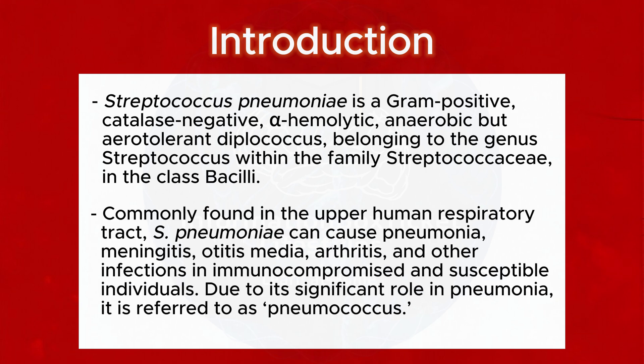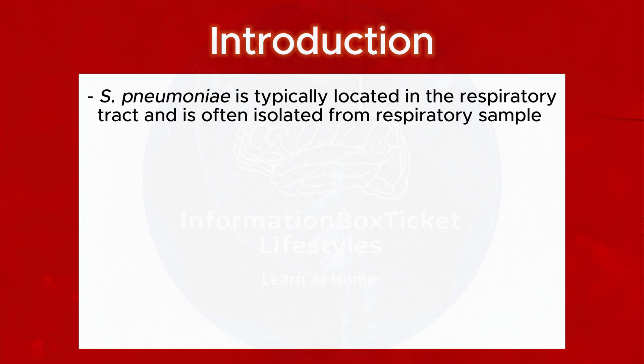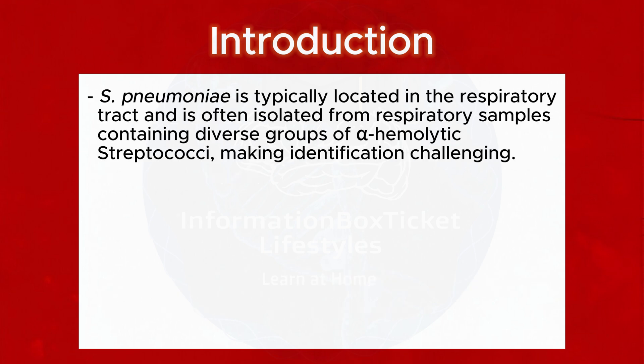Commonly found in the upper human respiratory tract, S. pneumoniae can cause pneumonia, meningitis, otitis media, arthritis, and other infections in immunocompromised and susceptible individuals. Due to its significant role in pneumonia, it is referred to as pneumococcus. S. pneumoniae is typically located in the respiratory tract and is often isolated from respiratory samples containing diverse groups of alpha-hemolytic streptococci, making identification challenging.